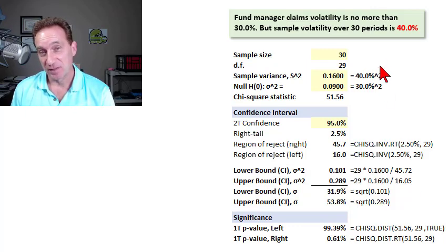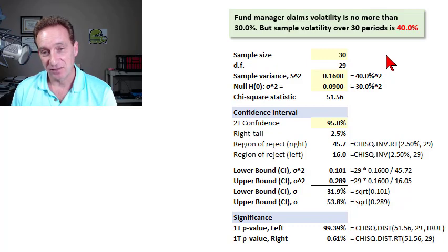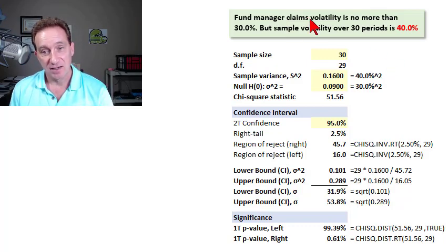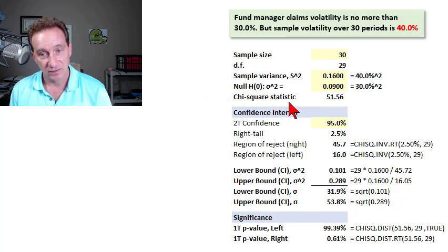In the previous video in this playlist, I called that T210, I illustrated a classic test of the sample mean. And now I'd like to illustrate the classic test of a sample variance. As we used the student's T distribution to test a sample mean, here we use a chi-square statistic to test the sample variance.